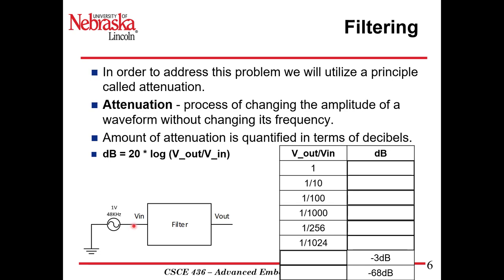For example, we have a sinusoidal waveform of 1 volt at 48 kHz, based on the audio codec in our system. If V_out over V_in equals 1, we get zero change in decibels. If we have 0.1 volts out, so V_out over V_in is 0.1, we get 20 times log base 10 of 0.1, which gives us minus 20 decibels — a minus 20 dB attenuation of the signal.